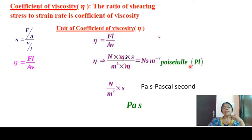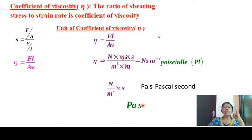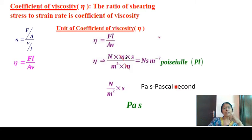This unit is called Poise. Poise is Newton-second per meter squared. Poise is the unit of the coefficient of viscosity. It is also expressed as Pascal-second (Pa·s).